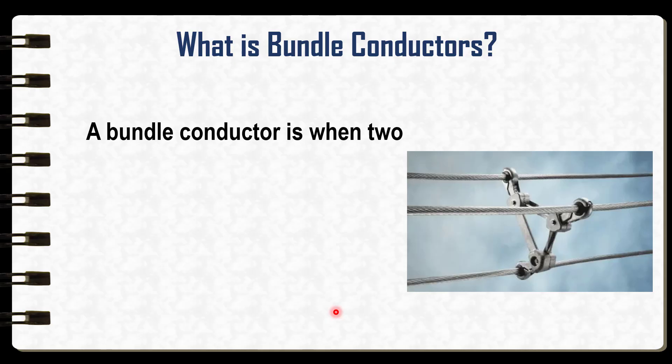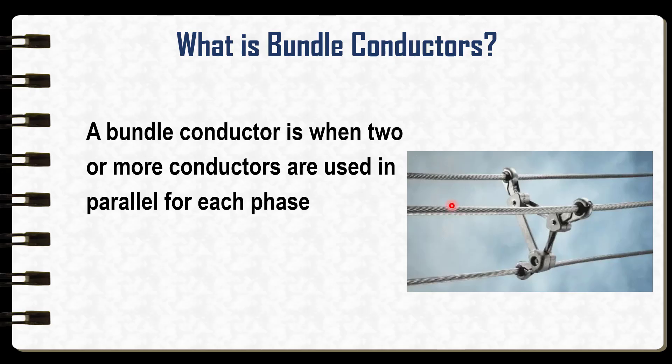A bundle conductor is when two or more conductors are used in parallel for each phase of a transmission line. They are kept separated with the help of these spacers, but electrically they are connected and act as a single conductor.